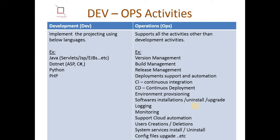Let's see operations. Operations cover everything other than development activities — from source code management, compilation, build management, packaging, deployment and release management, CI/CD (continuous integration and continuous deployment), environment provisioning, installing and uninstalling services, user creation and deletion, and config file updates. All activities needed to run the project are called operations, and these are going to be automated using DevOps.